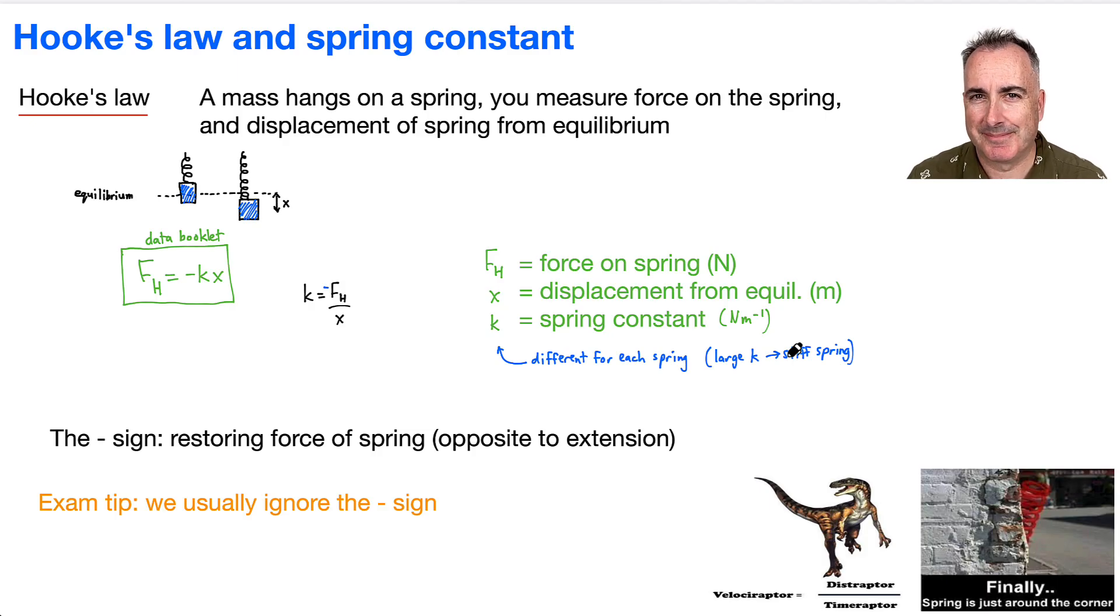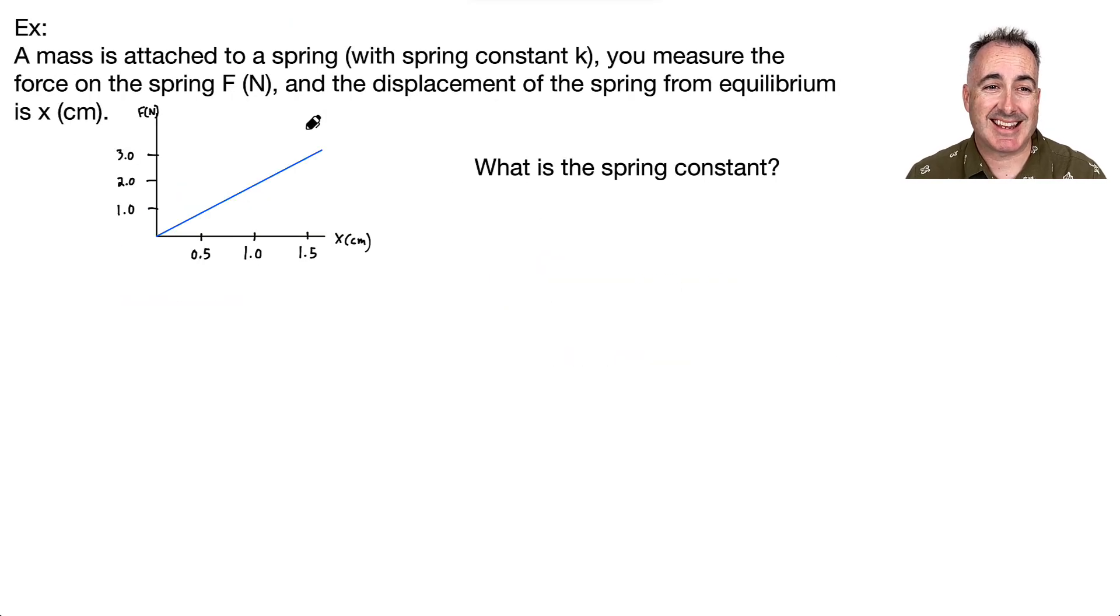Let's do an example. So we have a mass attached to a spring with spring constant K. You're going to measure the force on the spring, that's F, and you're going to measure the displacement of the spring from equilibrium. And they gave you X in centimeters. Watch out! So we have this graph, F in newtons, and we have this graph on the X-axis, which is X in centimeters. The question is, what is the spring constant?